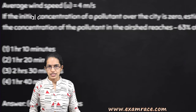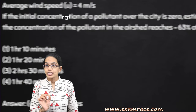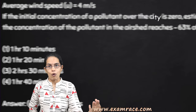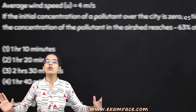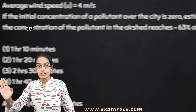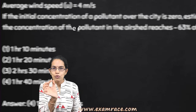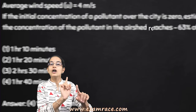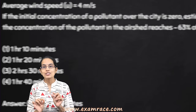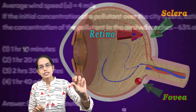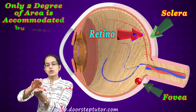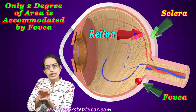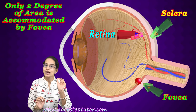Let's understand fovea as follows: at one time, only two letters of the page you are looking at would be visible in the clearest form. We see the whole page just because our eyes are scanning through it. But at any given moment, the most precise and clear vision is on just two letters of the whole page — that is where the image forms on the fovea. Fovea is able to accommodate only two degrees of the visual area.